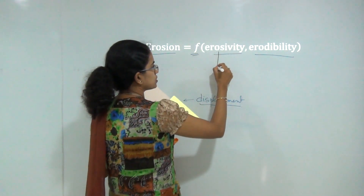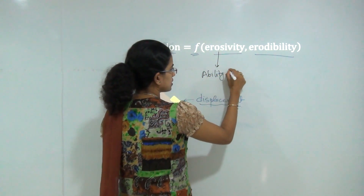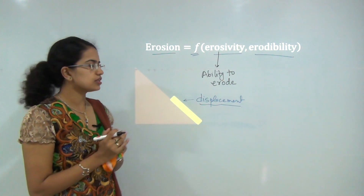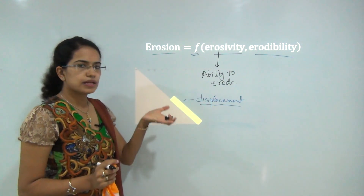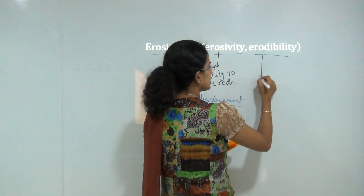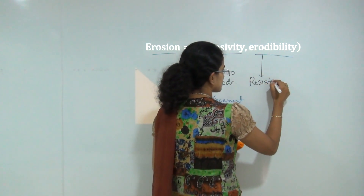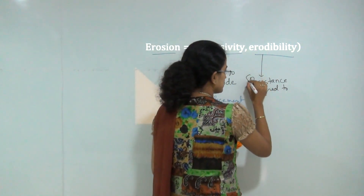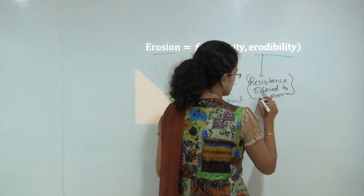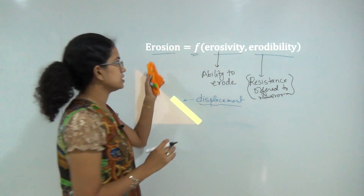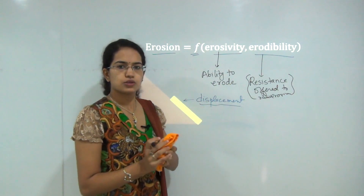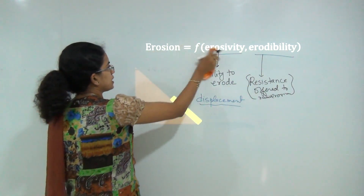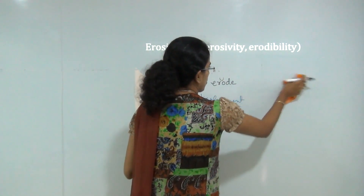Erosion is a function of erosivity and erodability. Erosivity is the capability or ability to erode the soil, while erodability is the resistance that is offered to restrict the erosion. So these two are mutually opposite terms. Erosion is thus a function of how much the soil has the ability to erode and the resistance that is being offered.